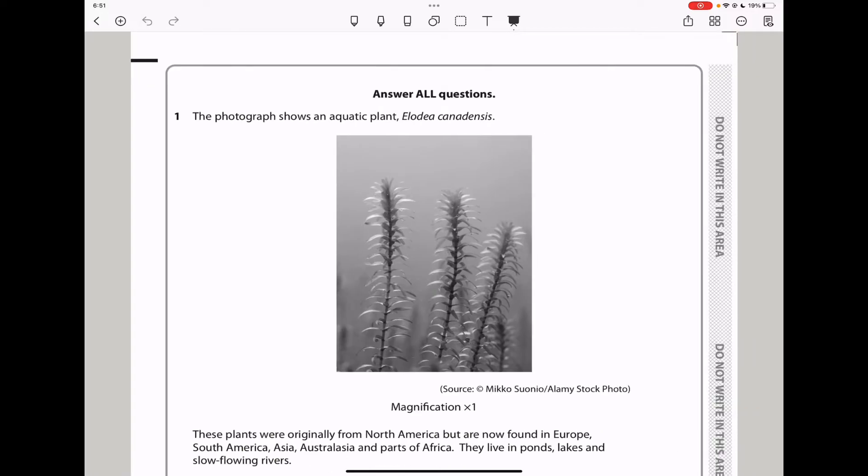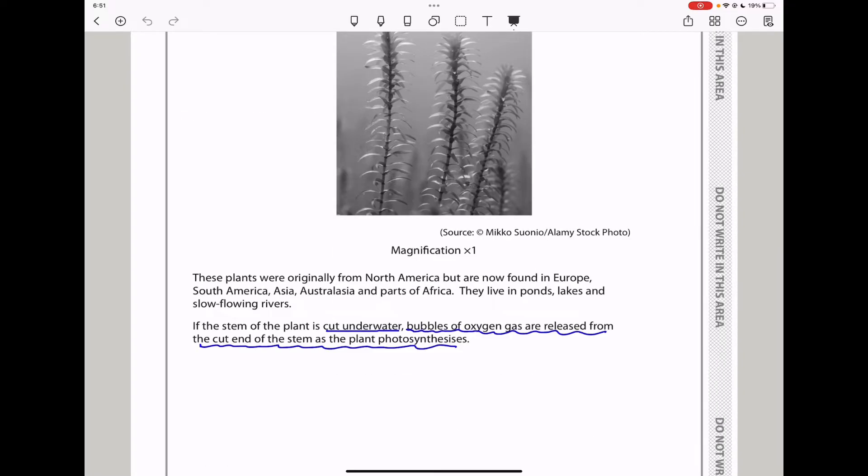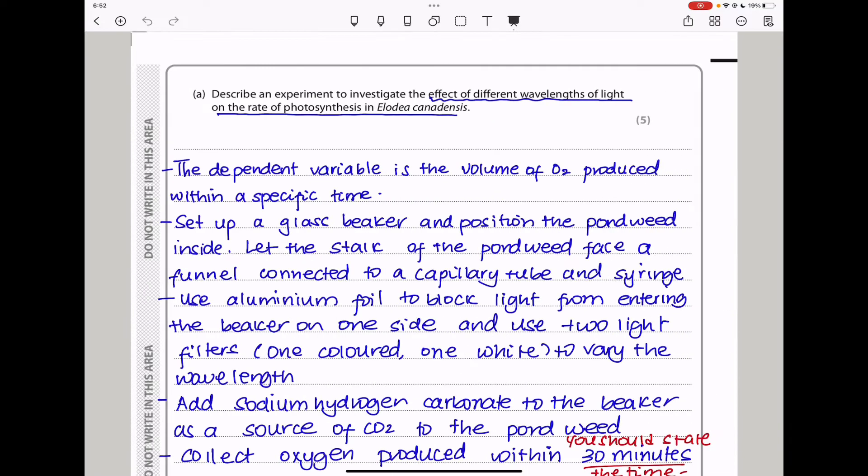Let us begin with question one. Question one: The photograph shows an aquatic plant, Elodea canadensis, which is what we see here. These plants were originally from North America but are now found in Europe, South America, Asia, Australia, and parts of Africa. They live in ponds, lakes, and slow-flowing rivers. If the stem of the plant is cut underwater, bubbles of oxygen gas are released from the cut end of the stem as the plant photosynthesizes.